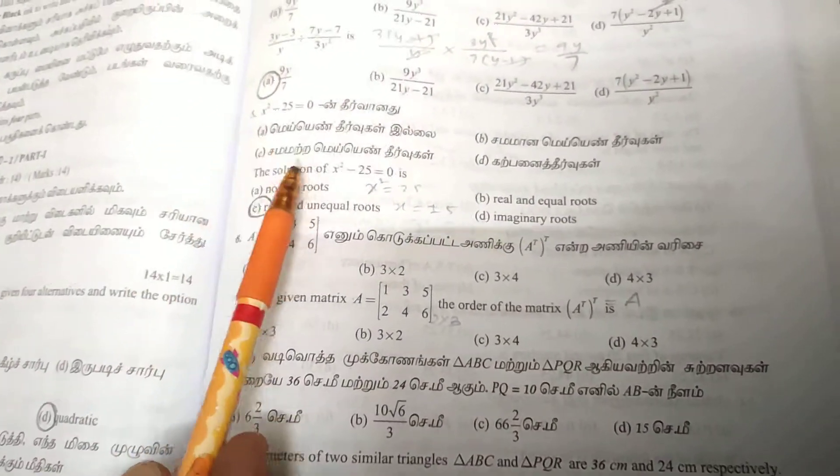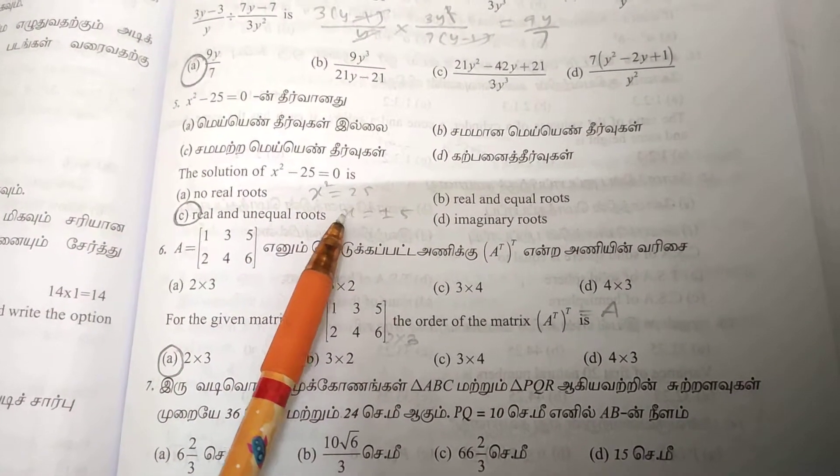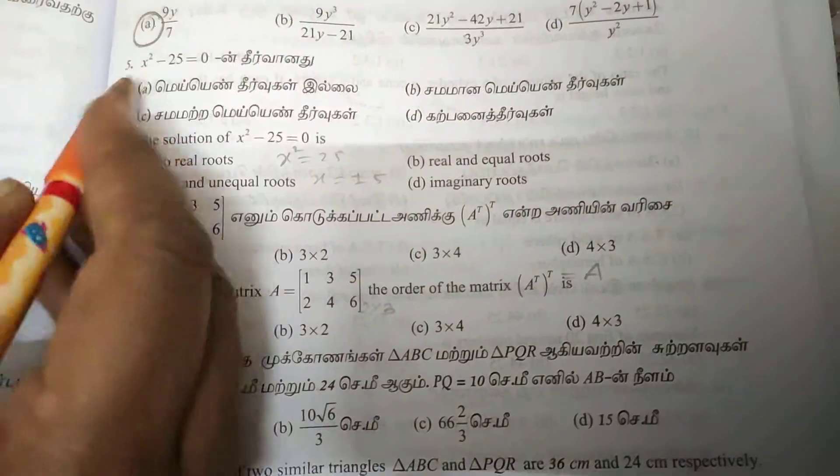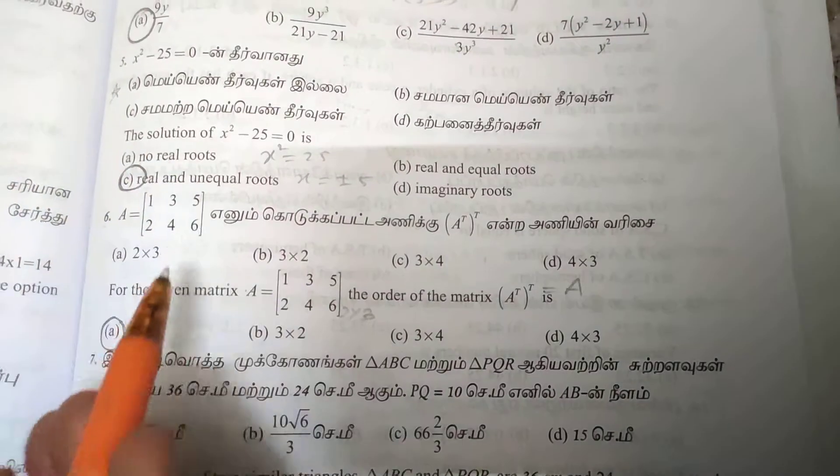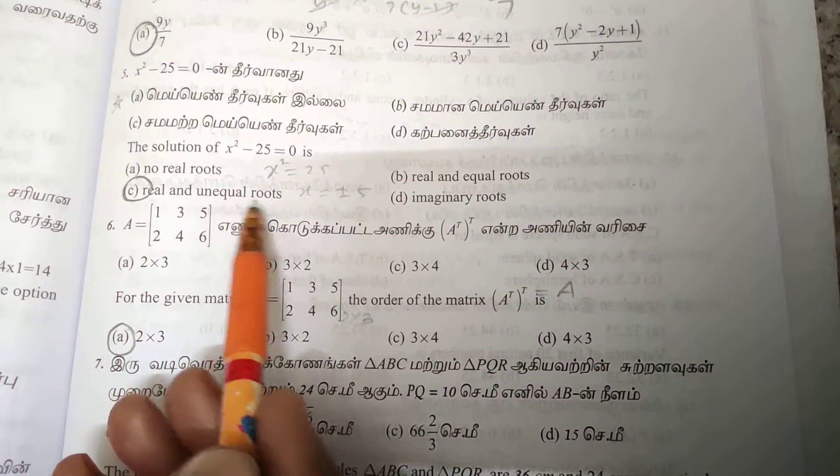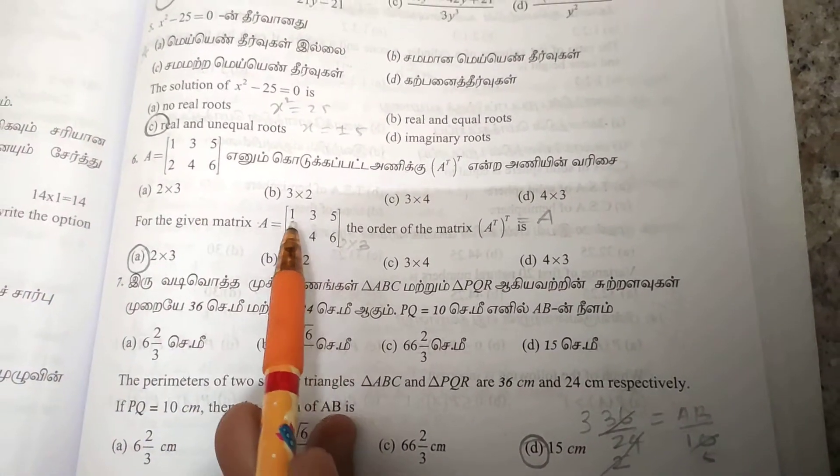Fifth one: x² equals 25, so x equals plus or minus 5. This represents real and unequal roots, since plus or minus 5 are different roots.